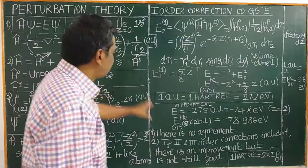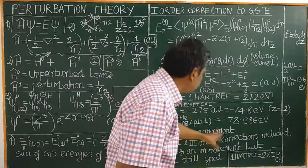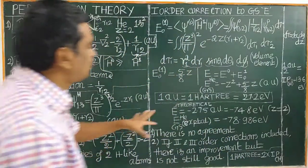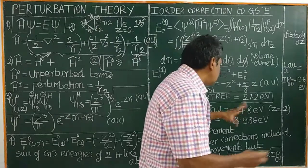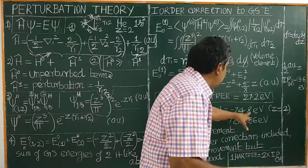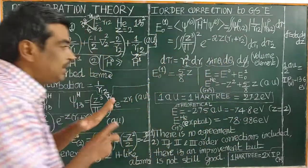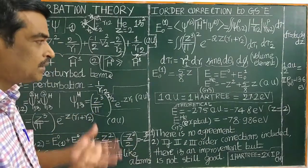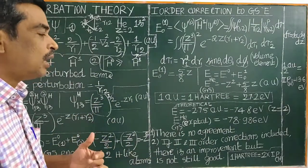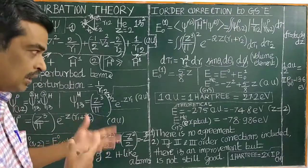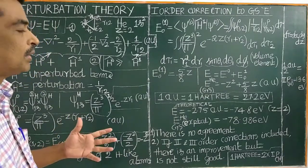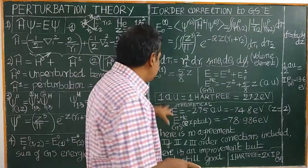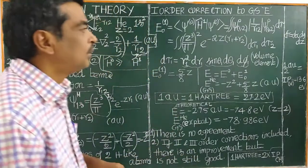If second-order and third-order corrections are included, then there will be improvement — values closer to 74 or 76 eV — but still not perfect agreement. The variation method is better than this perturbation method; we will study the variation method next.